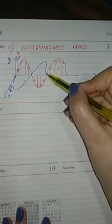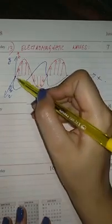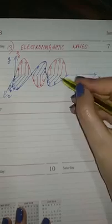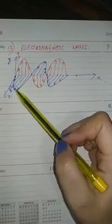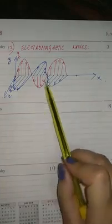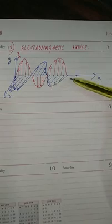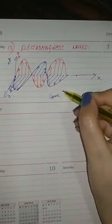The electric field is along the Y axis and the magnetic field is along the Z axis, and they are mutually perpendicular to each other. The wave itself is moving along the X axis — propagating in the X direction. Both E and B vary with time and space and have the same frequency.